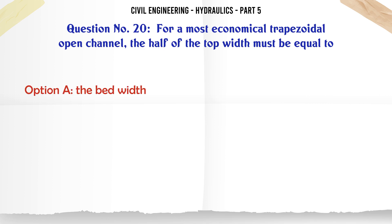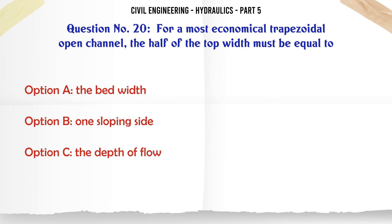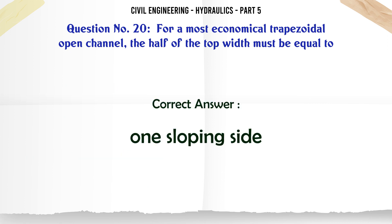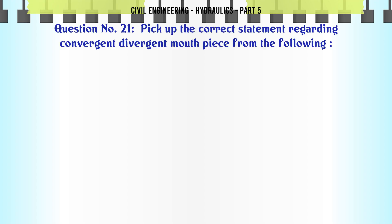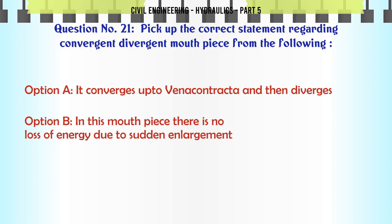For a most economical trapezoidal open channel, half of the top width must be equal to: A. bed width, B. one sloping side, C. the depth of flow, D. none of these. The correct answer is one sloping side.